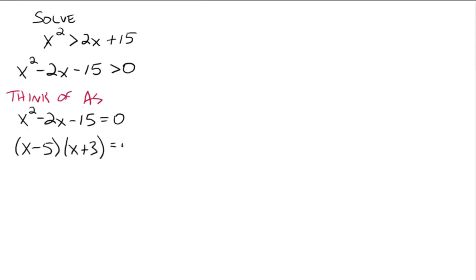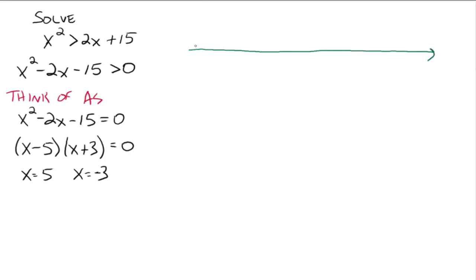Set each factor equal to 0 and you get 5 and negative 3. So 5 and negative 3 are the zeros to this quadratic equation. We're going to use them by drawing a number line and plotting the two zeros on the number line — negative 3 on the left and 5 on the right. These two zeros separate our number line into three regions.